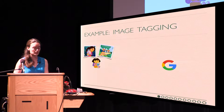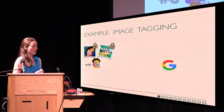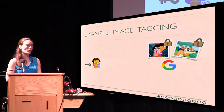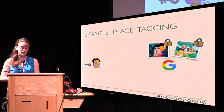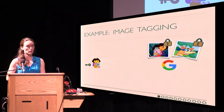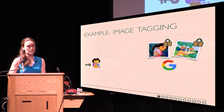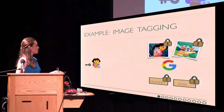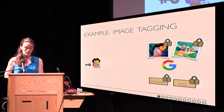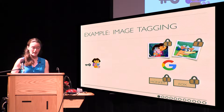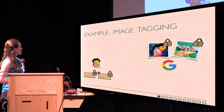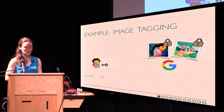What homomorphic encryption would allow her to do is encrypt her data before sending it to Google. She can send it over, go off and do something else, and in the meantime Google can compute on her encrypted data. He cannot ever see the content of her pictures, but he can still perform operations on the encrypted data. He can evaluate some image tagging algorithm and produce an encryption of the resulting tags. When Dora comes back, no communication is needed during this process — she can use her own secret key to decrypt those tags and get the result of the computation she wanted.